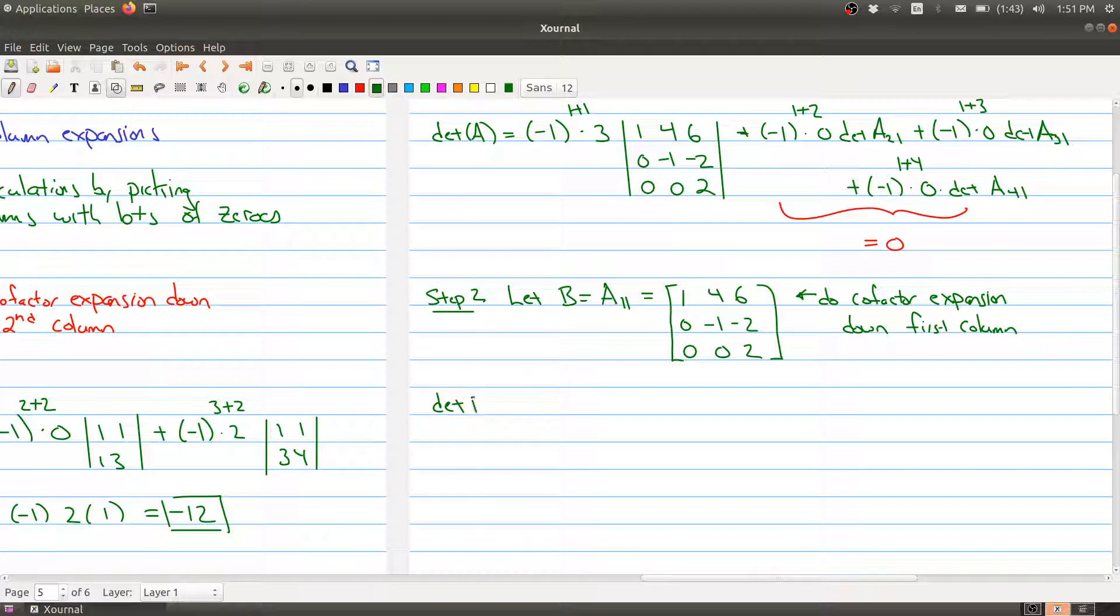The determinant of B is going to be (-1)^(1+1) times 1, times the sub matrix I get by wiping out row one and column one: -1, -2, 0, 2. And then as I'm going down, the rest of the columns are zero, so in fact I can just say plus zero plus zero. I don't want to waste our time writing out plus or minus signs because they all disappear.